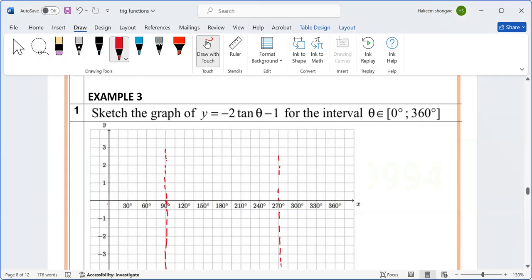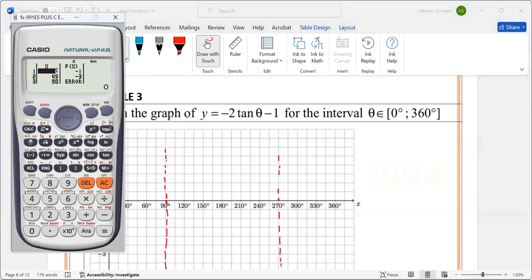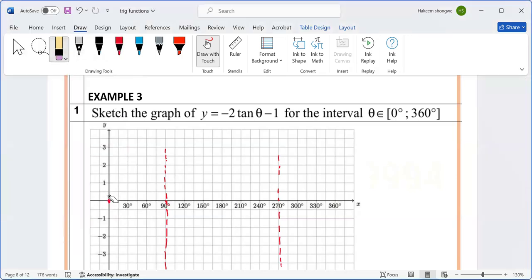0° is at negative 1. 45° we don't go to 30, we go to 45. Where's 45? 45 is between 30 and 60. What does that one give us? It gives us negative 3.